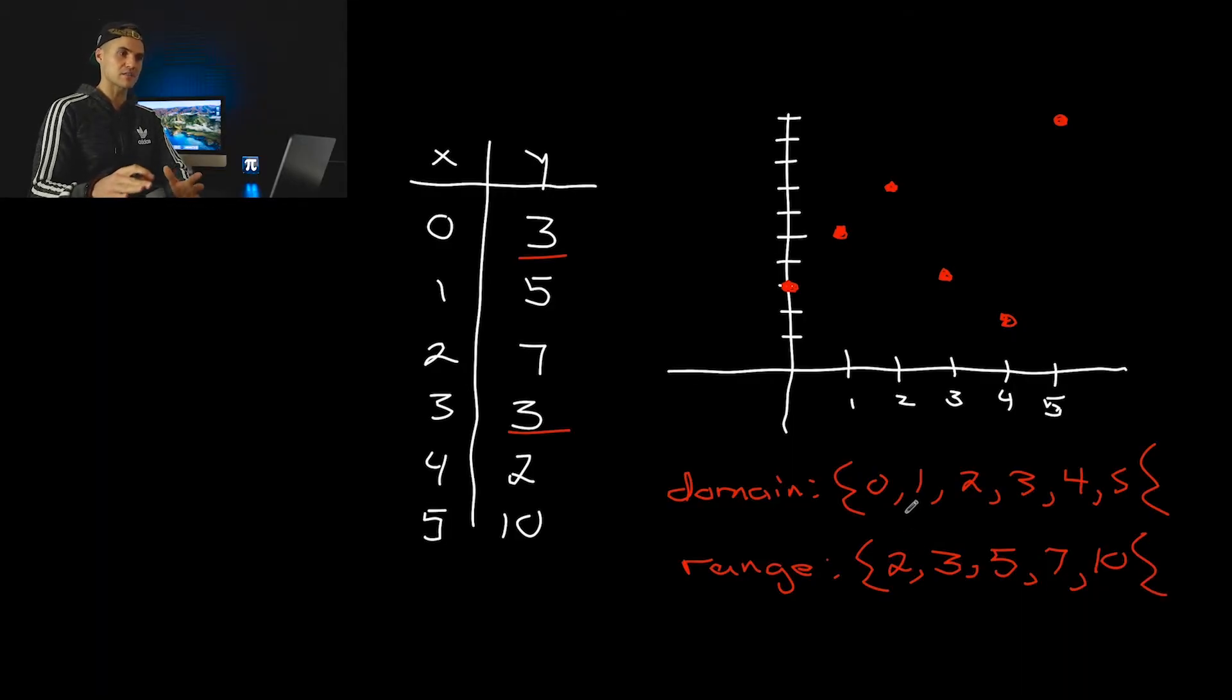And then to see whether or not it's a function, we run the vertical line test and we check, is there any two points that have the same x value? So for example, if we had like another point here, then it would fail the vertical line test. But notice that there is no pair of points that have the same x value. If we run a vertical line, we're not going to be touching two points at once. So it's all good. So this first relation here that we have is indeed a function.